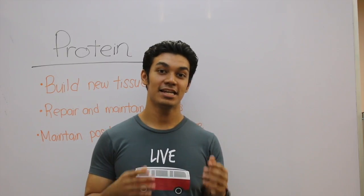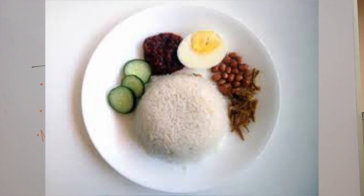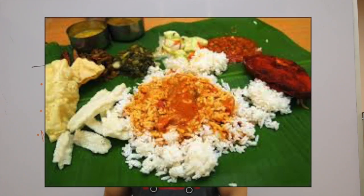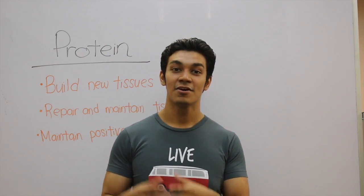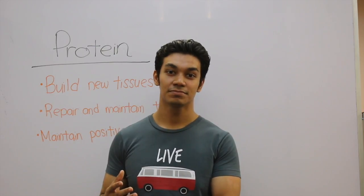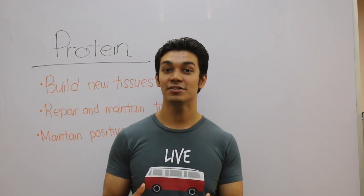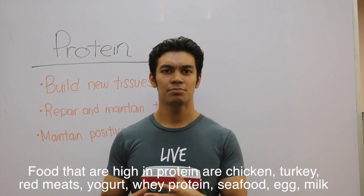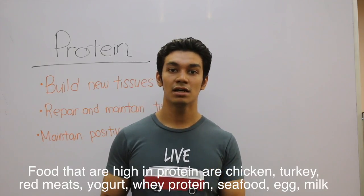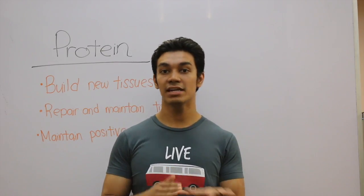Most Malaysian diets lack protein. If you look at nasi lemak, the only protein source — if you're lucky enough — is half of a hard boiled egg. If you look at banana leaf rice, the majority is rice which is a carb source, and the only protein you get is a small piece of ikan tenggiri or a plate of chicken curry. As a Malaysian, we need to increase our protein intake and we can do so with different protein sources such as chicken, tuna, all kinds of meat, fish and even egg.